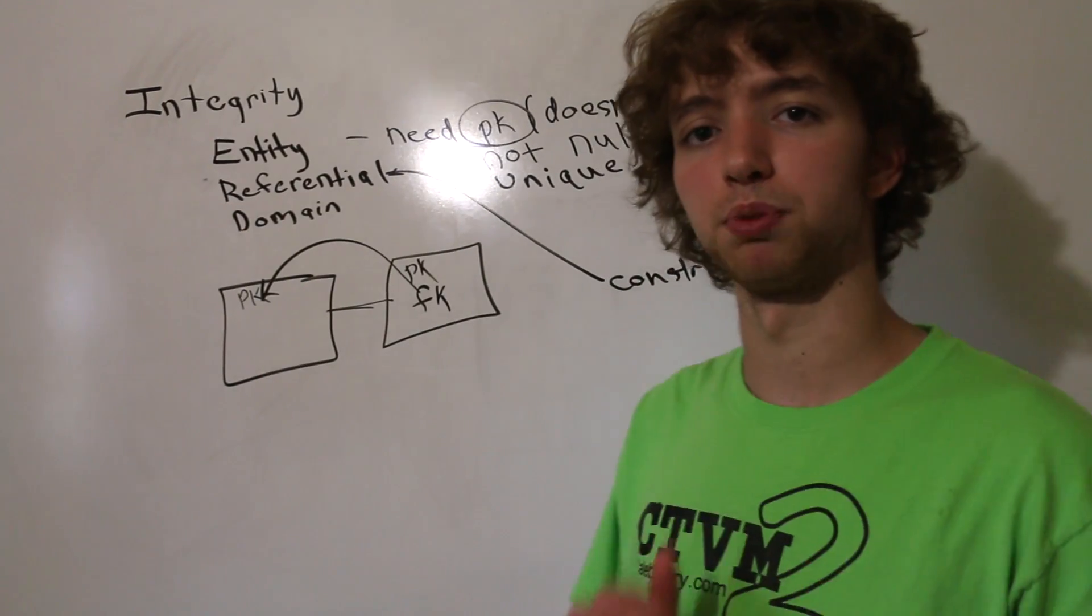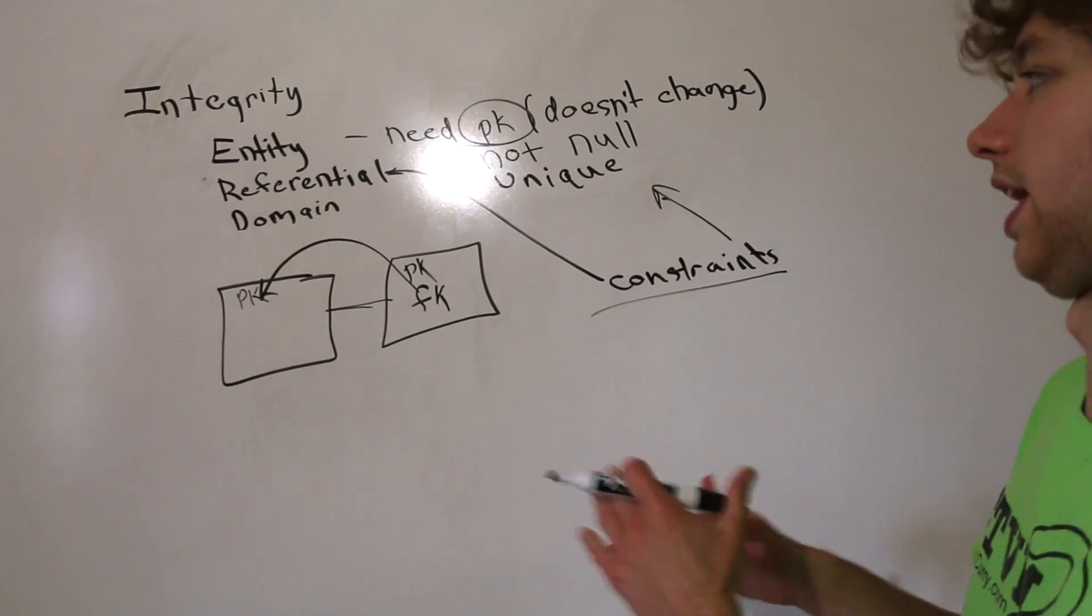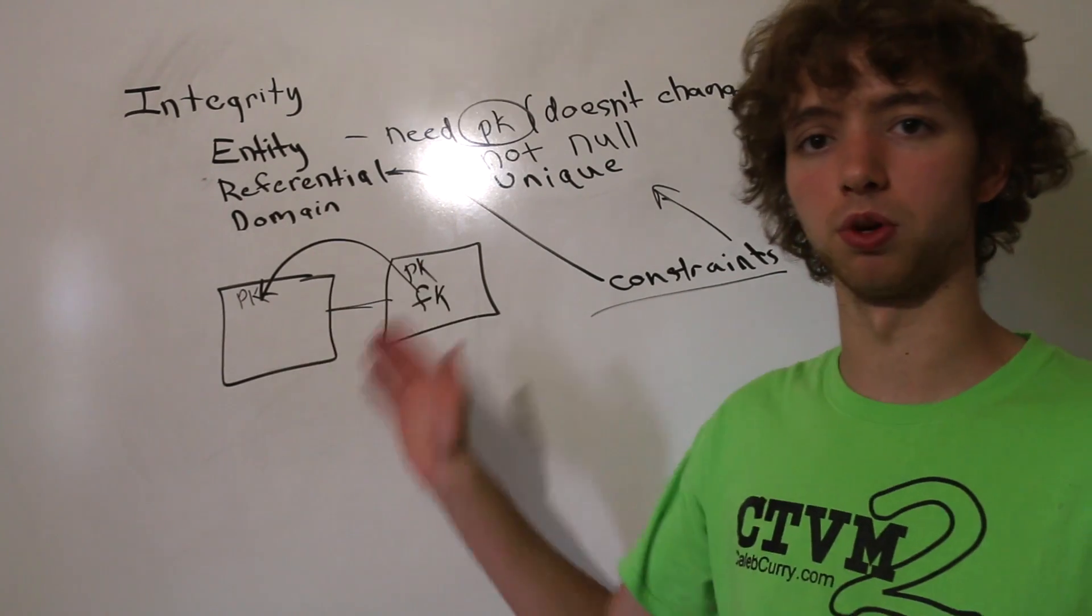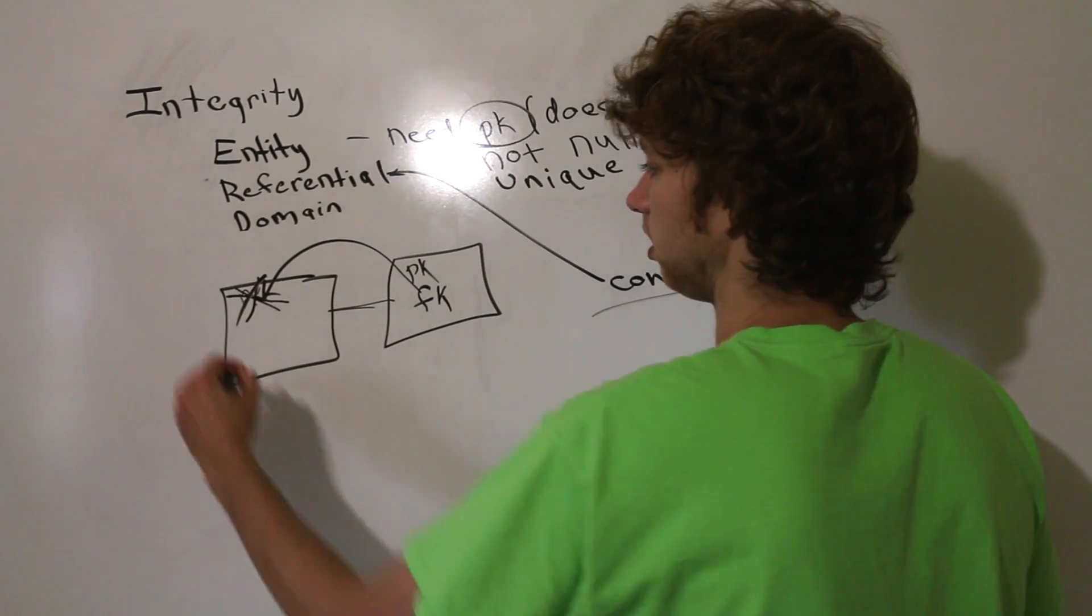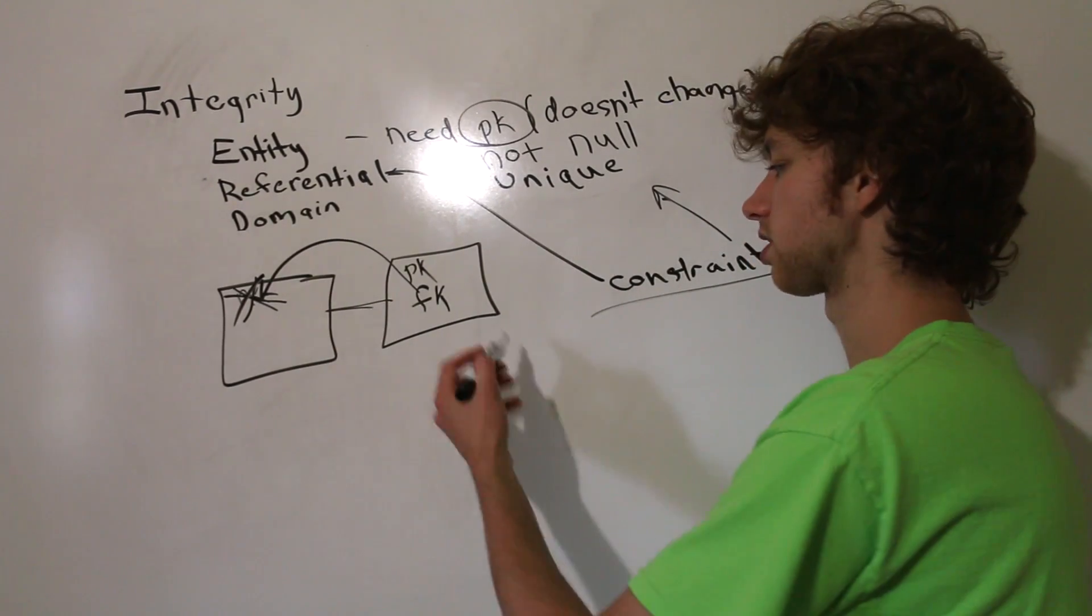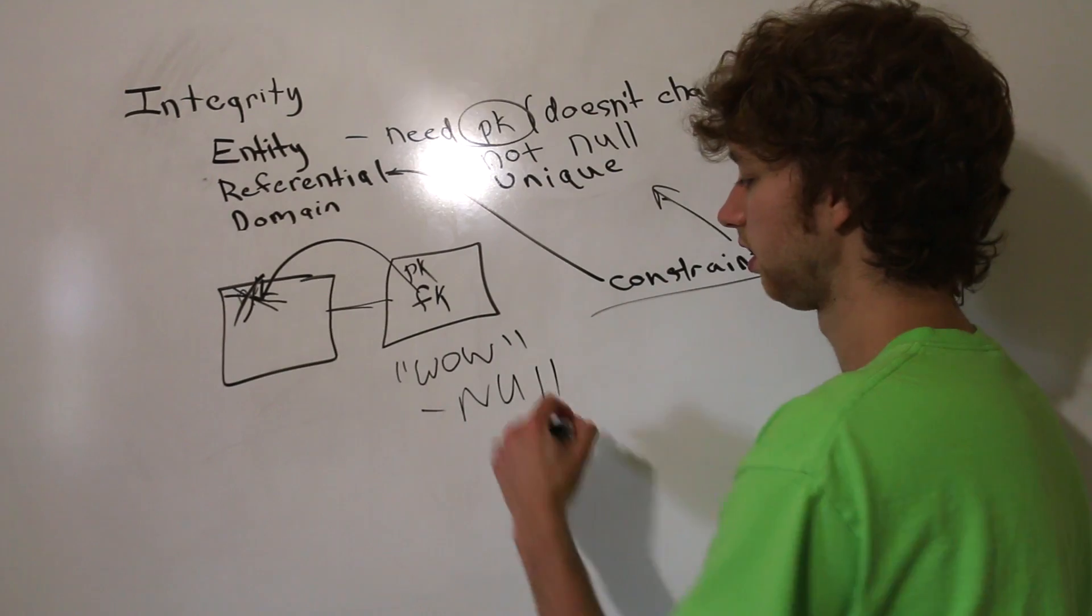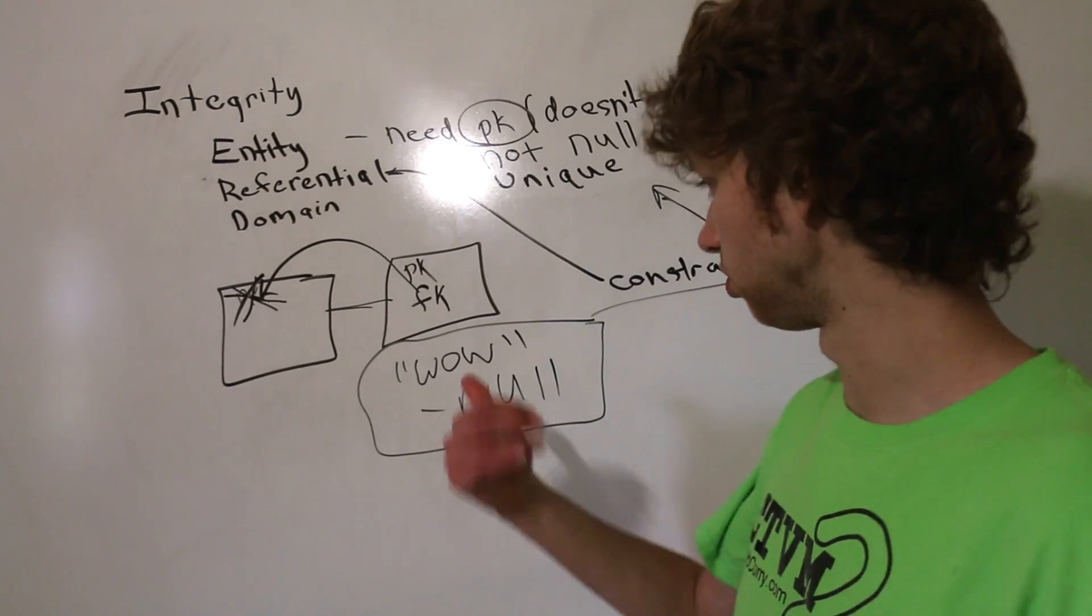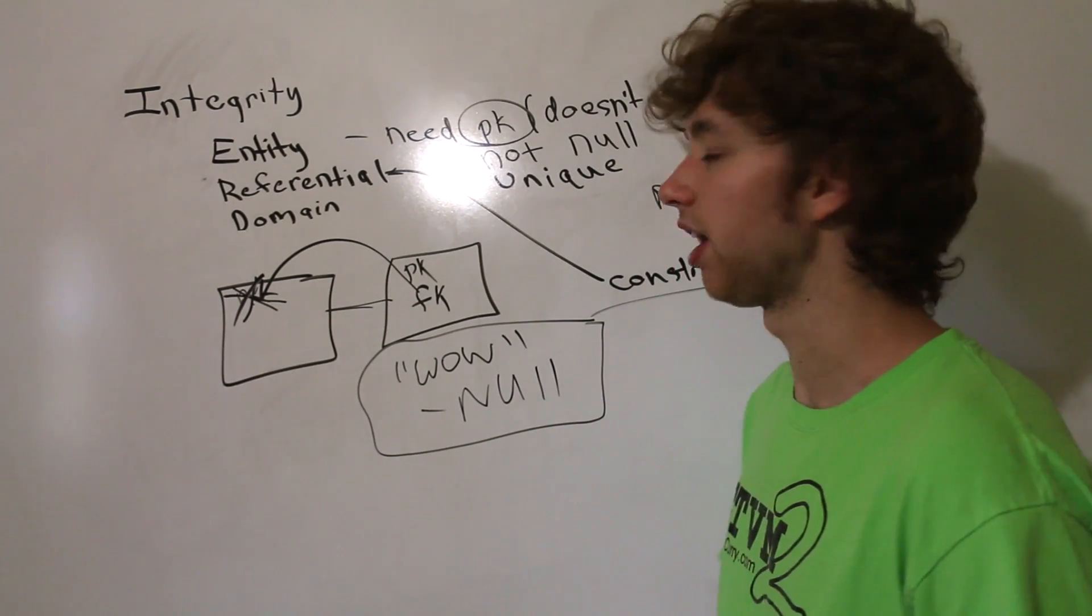Now if you want referential integrity, we have to protect that using constraints. Constraints are basically rules that don't let you do certain things to destroy the database. For example, if we did not have constraints and we had this foreign key connection, well then we can make it to where if we delete this person, he's gone, and this comment still exists. That doesn't make sense because comment can't exist without somebody posting it. Then we're gonna have all these comments like 'wow' and it's gonna be by null. We don't want to see these kinds of things on a website or application because that's not good at all, because you don't know who said it. This is bad. So that's referential integrity.